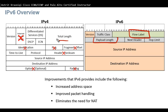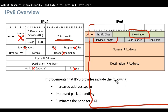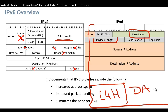In IPv4 we had Total Length; in IPv6 the name has changed to Payload Length, but it functions the same way. Payload Length includes the IPv6 header and the payload below it — the Layer 4 transport header and data — indicating how large the packet is.